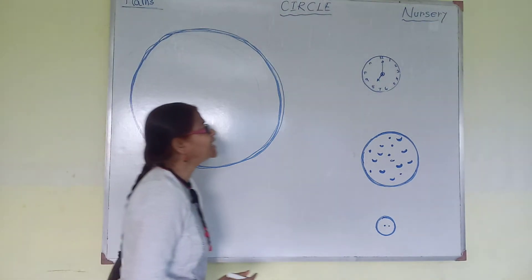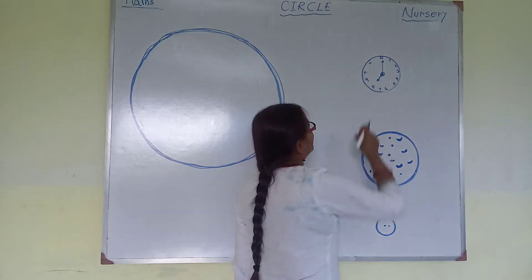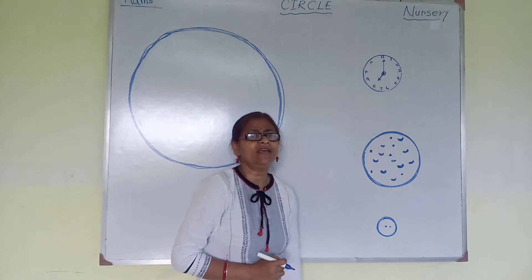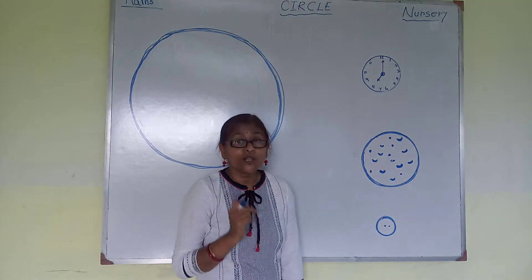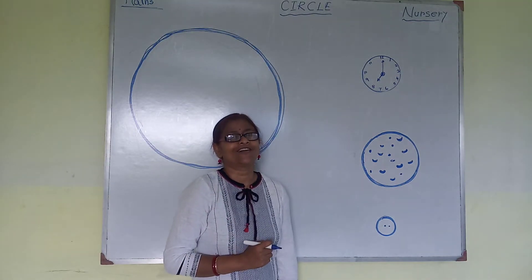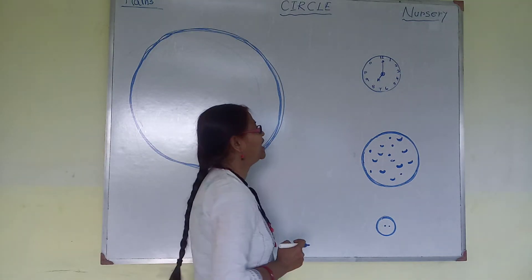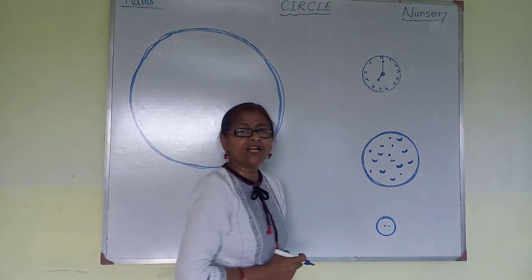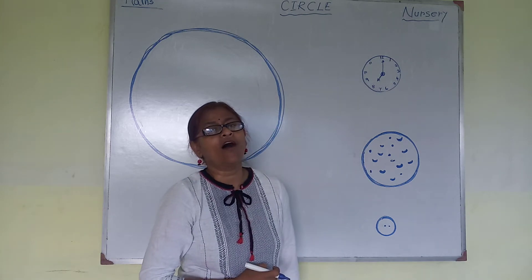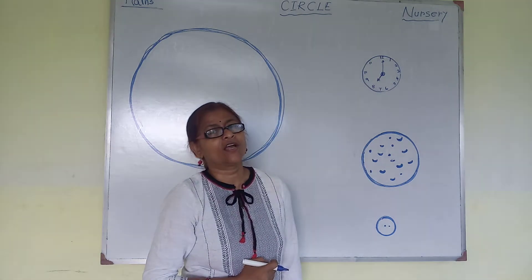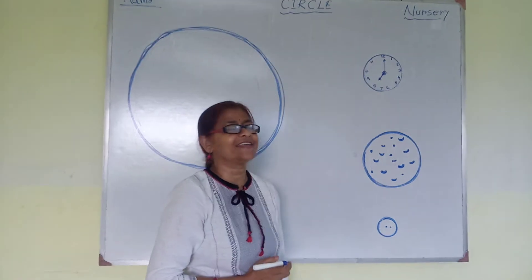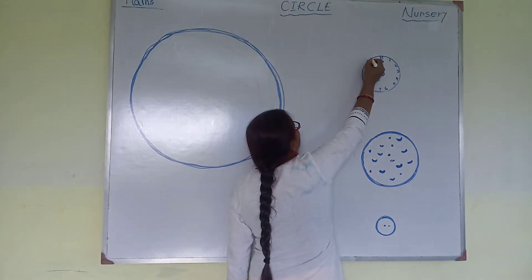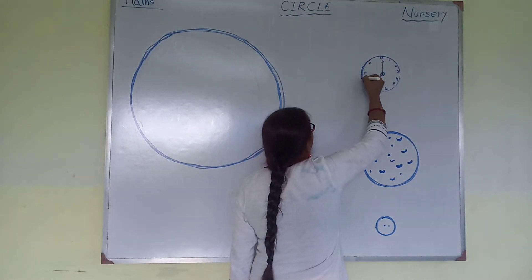Here I have drawn a picture of a clock. Maybe it is a one o'clock or a ten o'clock. Have you seen a clock? Yes. The shape of a clock is a circle.